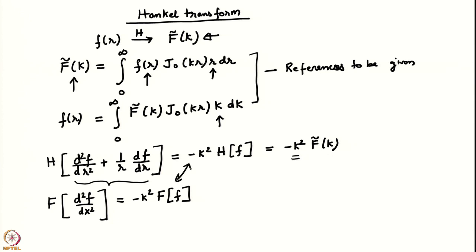You can see that the Hankel transform will do in a cylindrical axisymmetric geometry what a Fourier transform does in Cartesian geometry. This is the reason we are using the Hankel transform here, and we will recover very identical results compared to what we recovered earlier. The only difference is that the solution to the Cauchy-Poisson problem will be represented as an integral, and the quantity inside the integral changes from e^(ikx) to J₀(kr), reflecting the difference in basis functions.